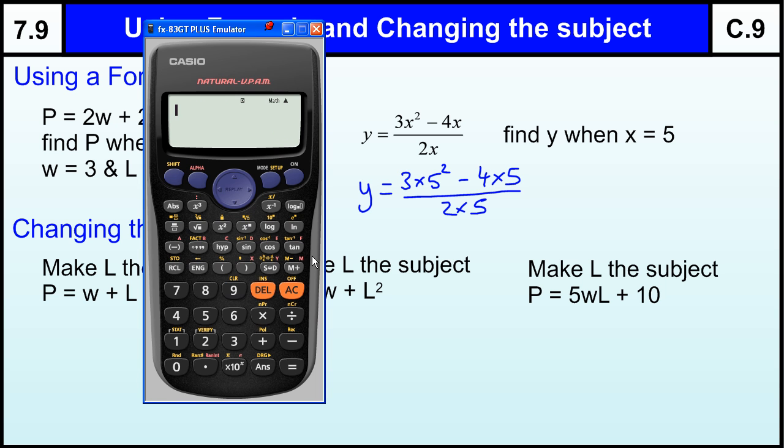So let's just bring up a calculator and have a look at that. So that whole fraction, 3 times 5 squared minus 4 times 5. And on the bottom we've got 2 times 5. And that gives us 11 over 2, which is the same as 5.5.